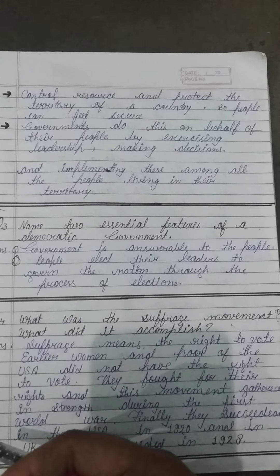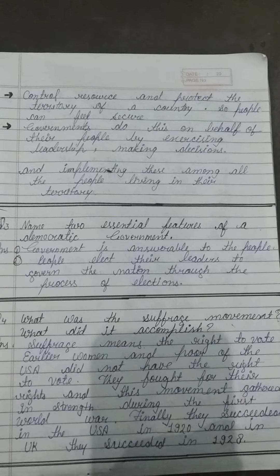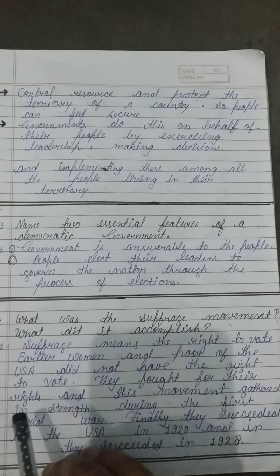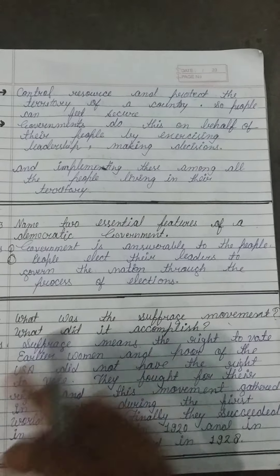USA mein 1920 mein sabko equal right diya gaya — wo apne is abhiyan mein successful hue. Aur UK mein 1928 mein logon ko voting ka equal right diya gaya.